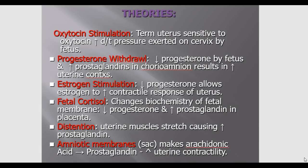You also have the progesterone withdrawal theory and the estrogen stimulation theory. Think of estrogen and progesterone on a scale — progesterone is needed to maintain pregnancy. As pregnancy progresses, progesterone decreases while estrogen increases. Estrogen increases uterine contractility, so as progesterone decreases it allows estrogen to rise — the hormone supporting pregnancy decreases while the hormone related to uterine contractility increases.